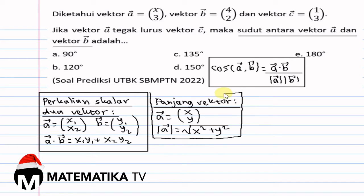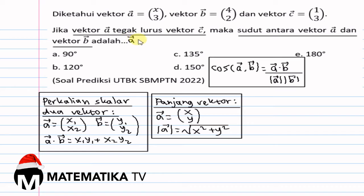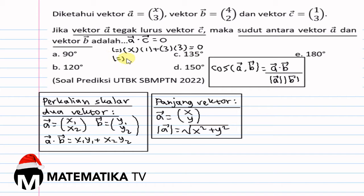Karena Vektor A tegak lurus Vektor C, maka Vektor A dot Vektor C sama dengan 0. Vektor A dot Vektor C sama dengan X kali 1 plus 3 kali 3 sama dengan 0, sehingga X plus 9 sama dengan 0, maka X sama dengan min 9.